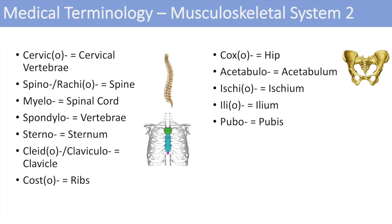The next one is pubo, which represents the pubis. So the three bones of the pelvis are the ileum, ischium, and pubis. You can think of pubo as relating to the pubic area, which is right around where the pubis bone is. The next one is sacro, which denotes the sacrum — the sacrum is part of the vertebral column and is the bone that connects the two ileum bones together.